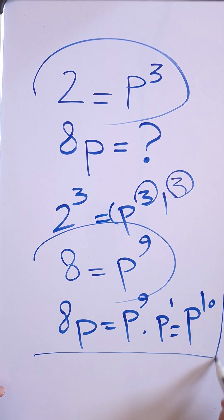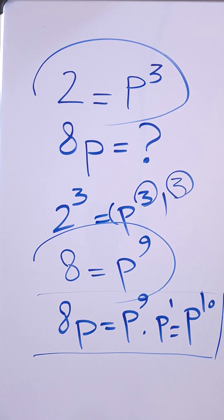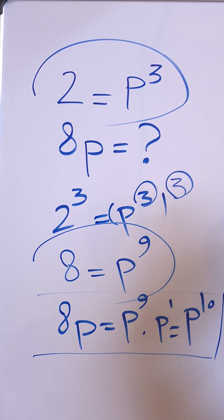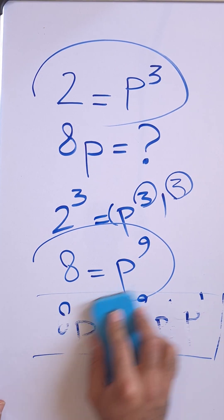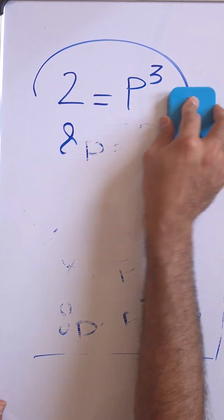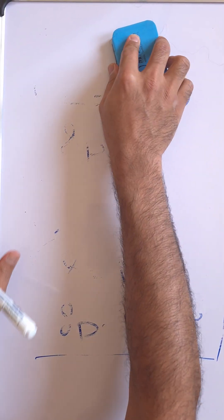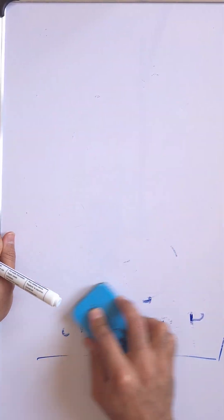So that's the final answer: 8p equals p to the 10 in terms of p, expressed in terms of p. But I have a bonus challenge for you, so let me just wipe the whiteboard.